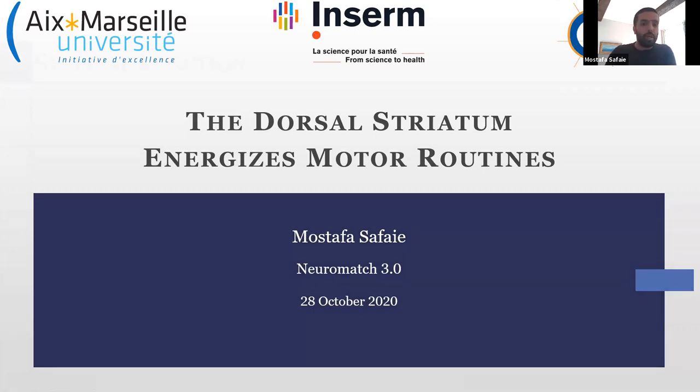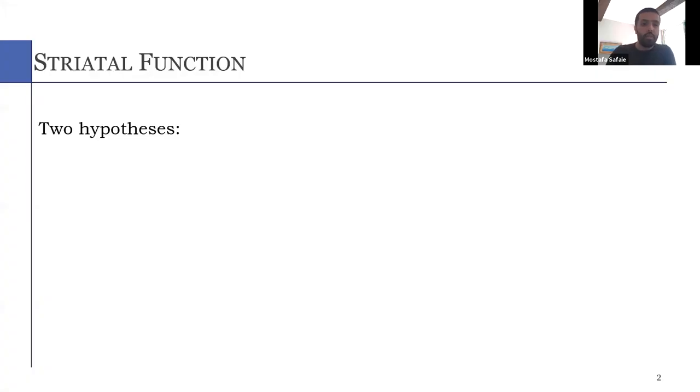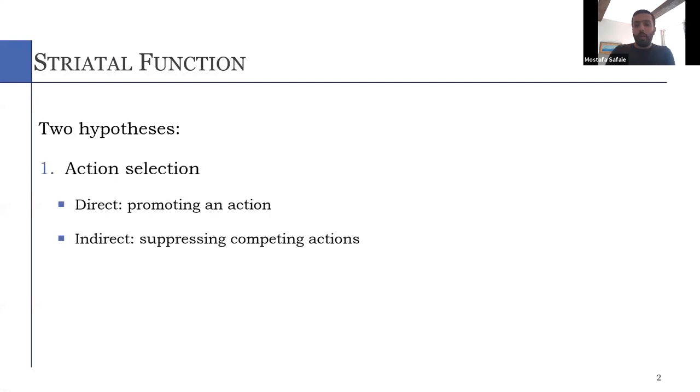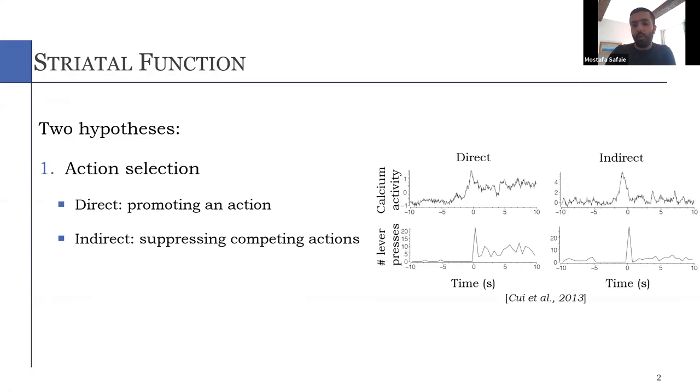But before getting to it, maybe first it's better to review the current hypothesis in the field about the role of the dorsal striatum. Generally, there are two hypotheses. One is action selection, proposing that the direct pathway promotes an appropriate action while the indirect pathway of the basal ganglia suppresses competing ones. For instance, in this example, we can see that those direct and indirect pathway activity increases right before a motor sequence.